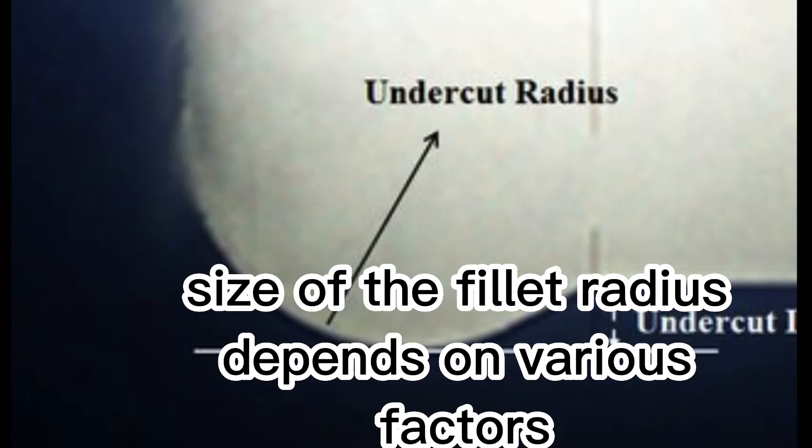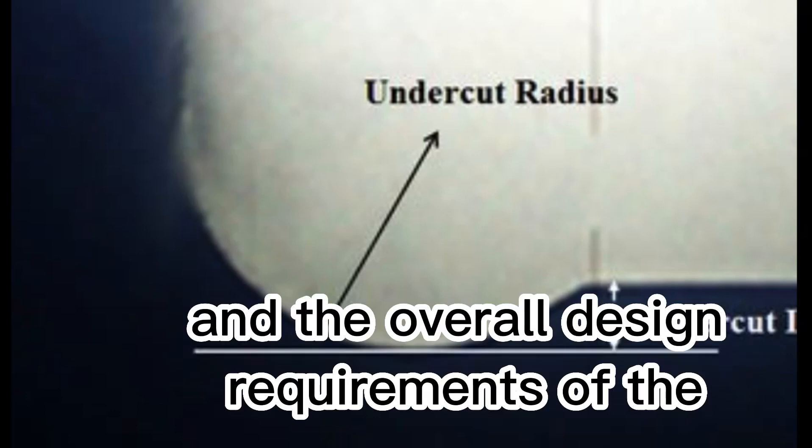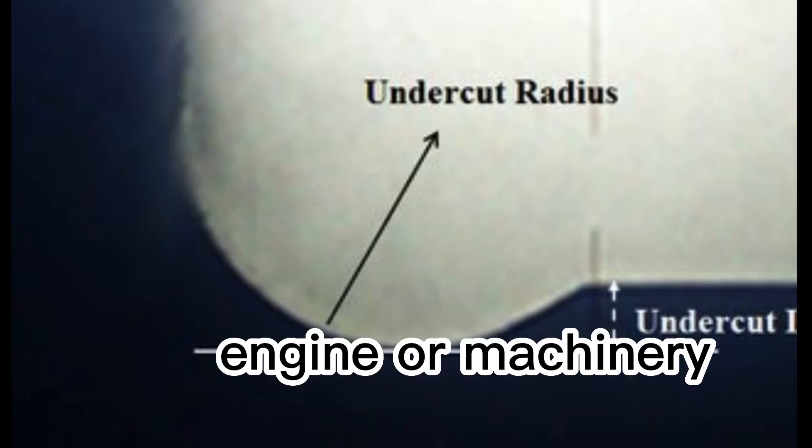The specific size of the fillet radius depends on various factors such as the material used, the intended application, and the overall design requirements of the engine or machinery.